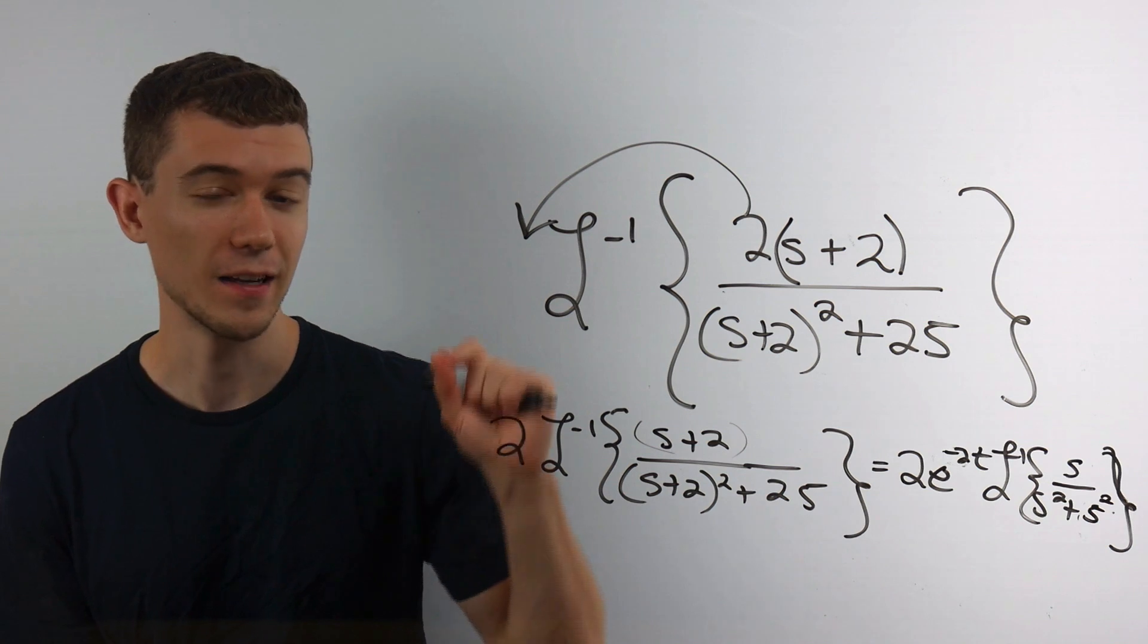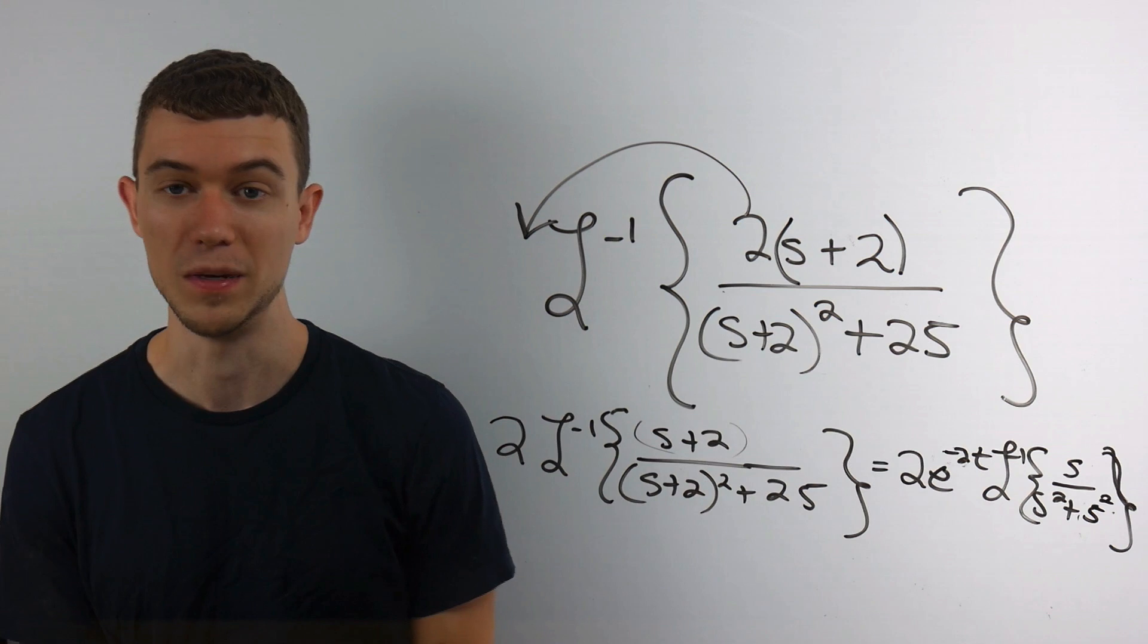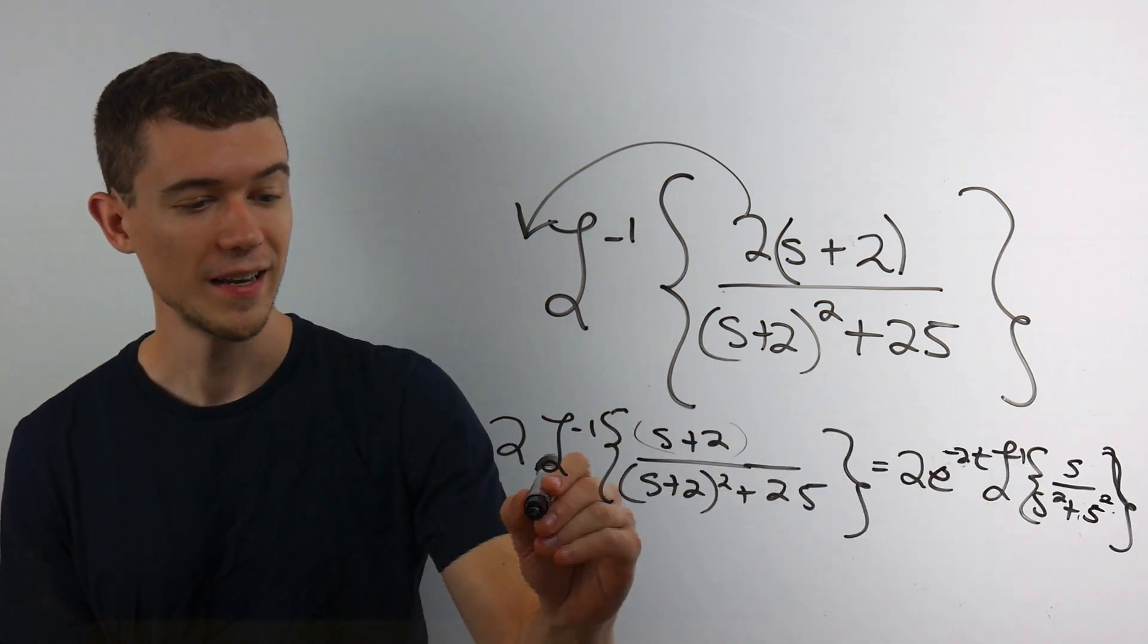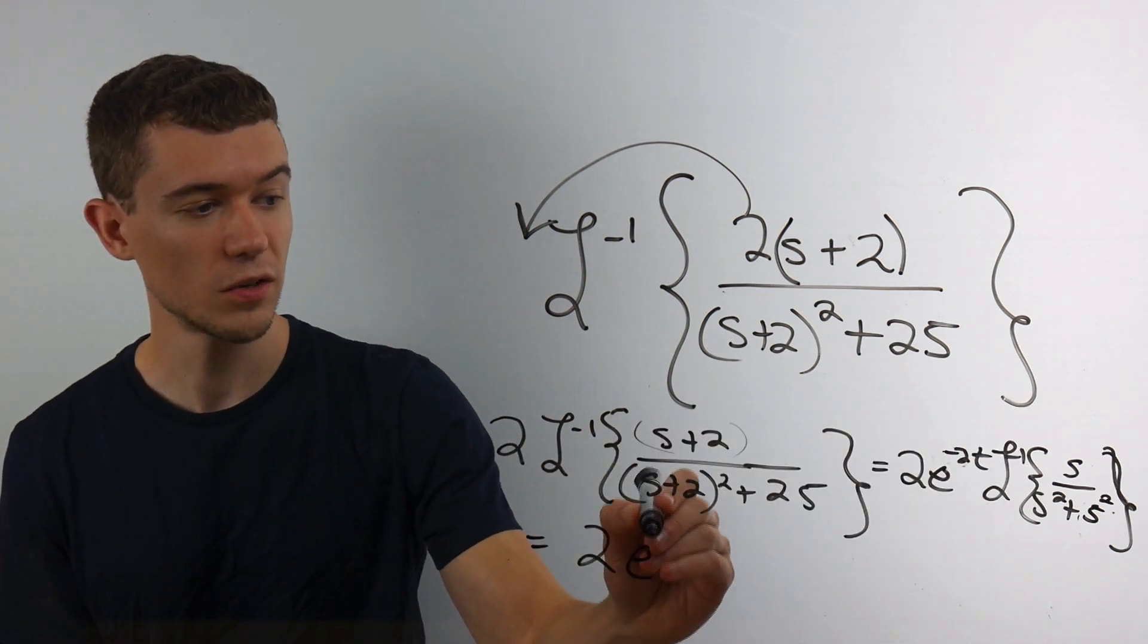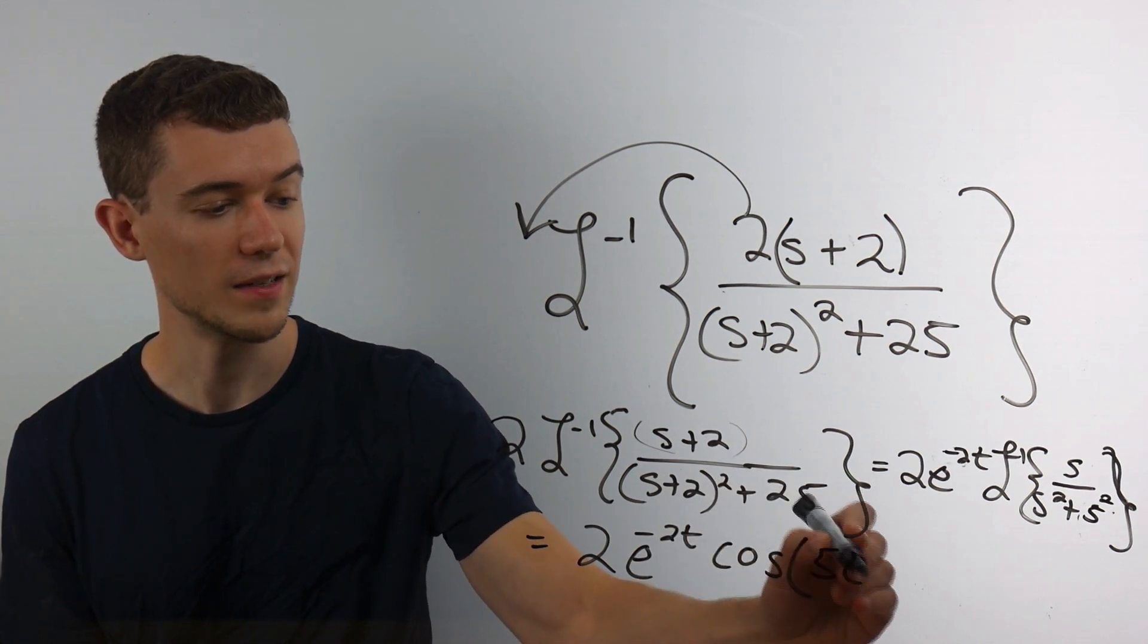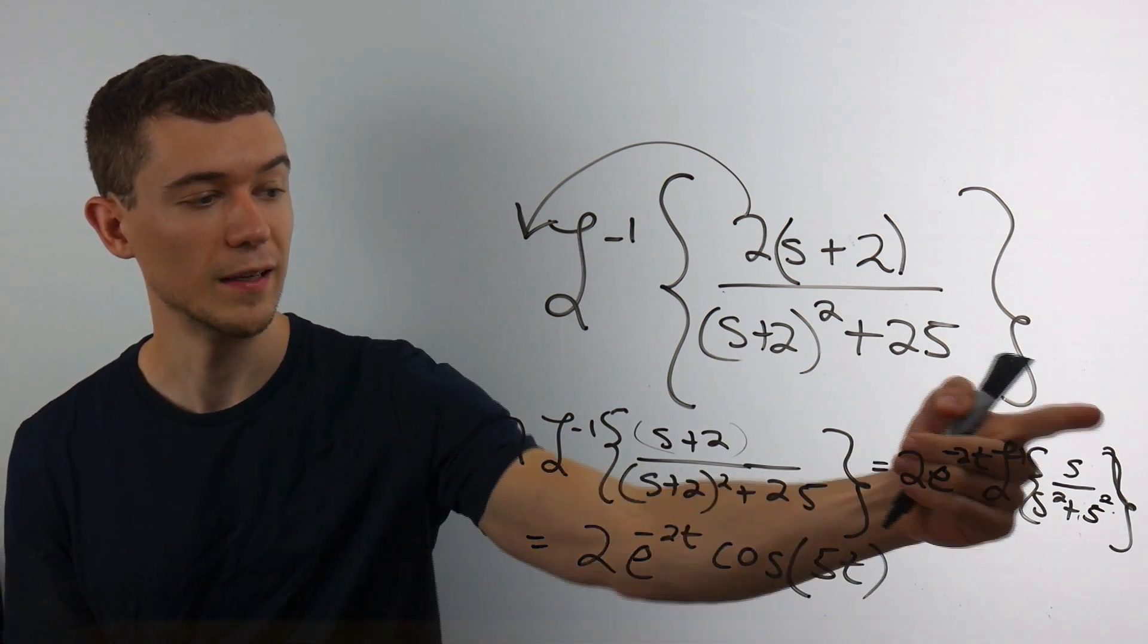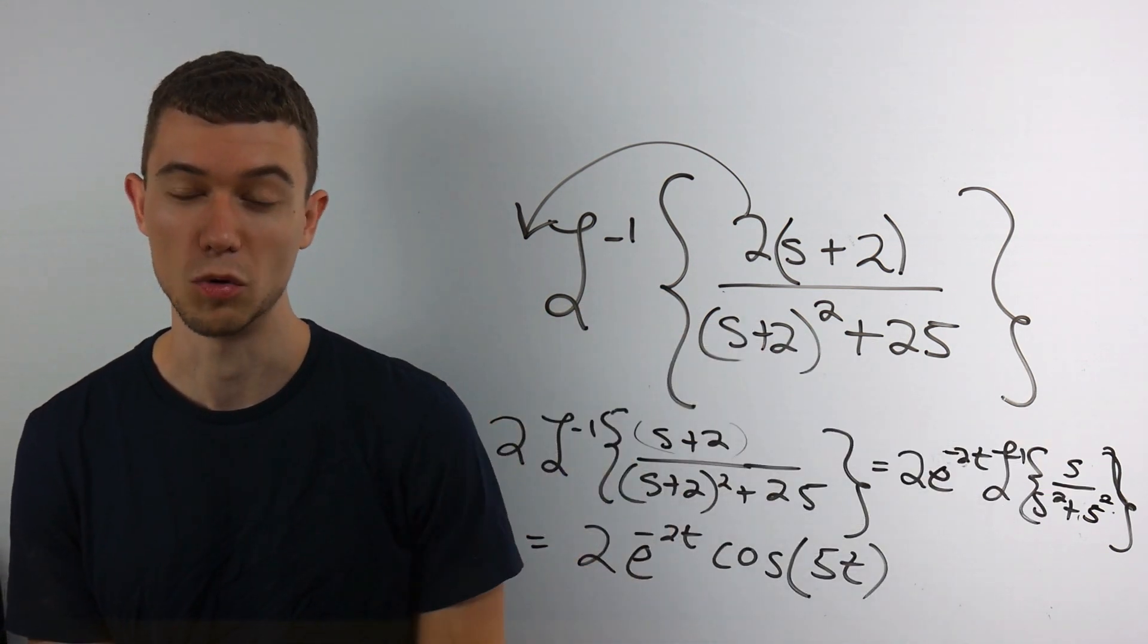You'll notice that the transform of cosine of bt is s over s squared plus b squared. So this is exactly the transform of cosine of 5t. The 5 gets squared and put there, and transforming cosine gives us the s over s squared plus 25.